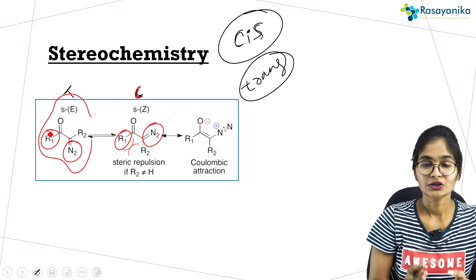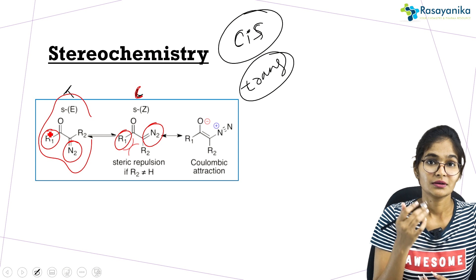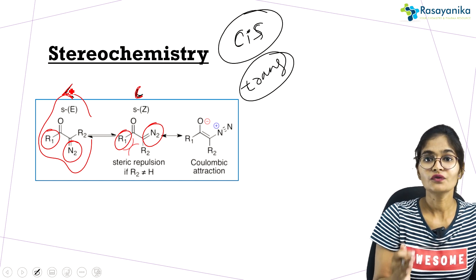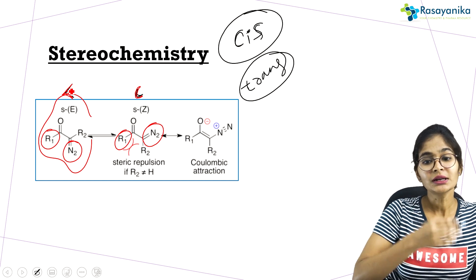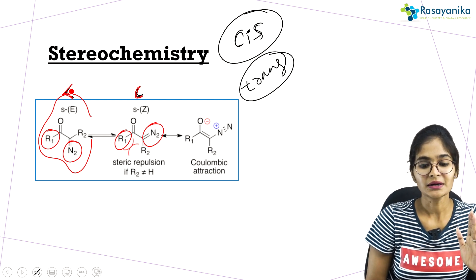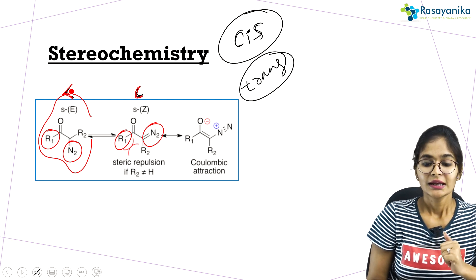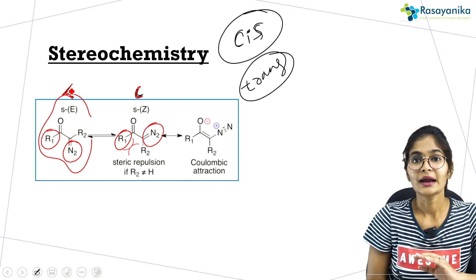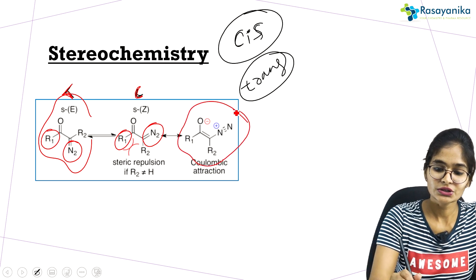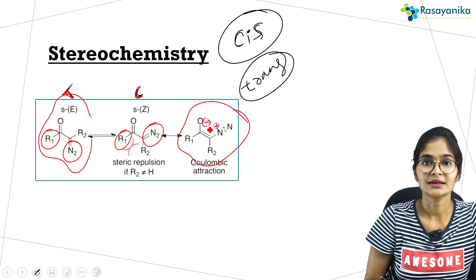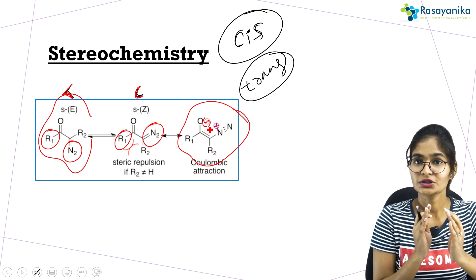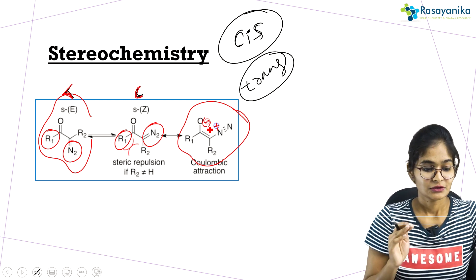In the trans conformation, the leaving group and migrating group are cis to each other — they are not anti-periplanar to each other. Because of this, the trans conformation follows the stepwise mechanism: first it forms the carbene, and after the ketocarbene formation it undergoes ketene formation. Additionally, in the cis conformation there is a Coulombic attraction due to partial positive charges on oxygen and nitrogen, which further favors the cis conformation over trans.